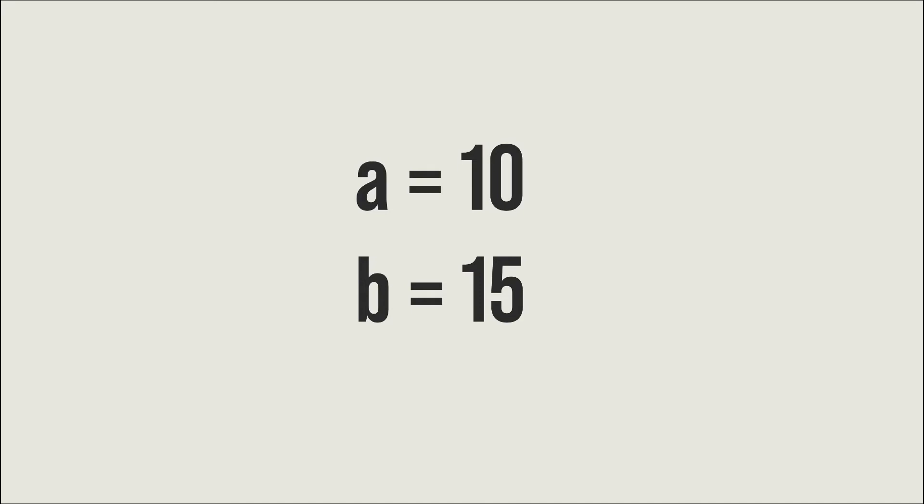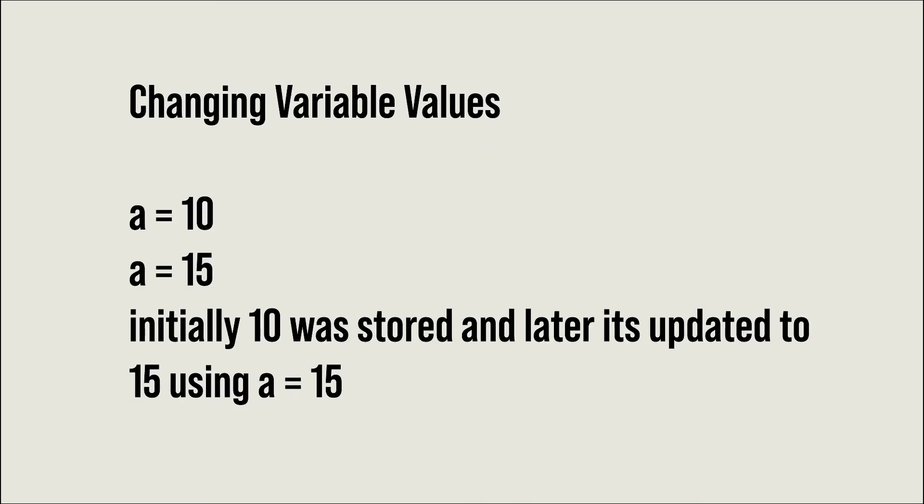Let us discuss changing variable values. For example, at the start of your program you have said a equals 10, and later as the program proceeds you can update or change the variable value — that is possible in Python by simply reassigning the variable. For example, you can say a equals 15, so initially 10 was stored and later it's updated to 15.